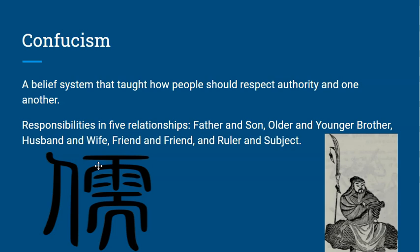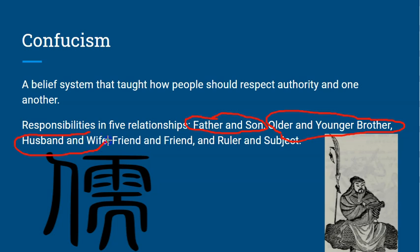We're going to look at some philosophies — not religions, but philosophies. One is Confucianism, the belief that taught how people should respect authority and one another. Responsibilities are defined in five relationships: respect between father and son, older and younger brother, husband and wife, friends, and rulers and the subjects being ruled.